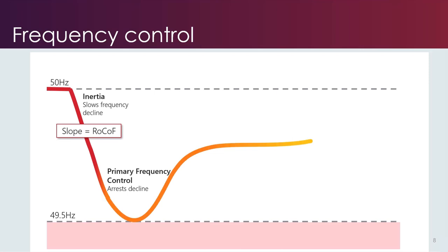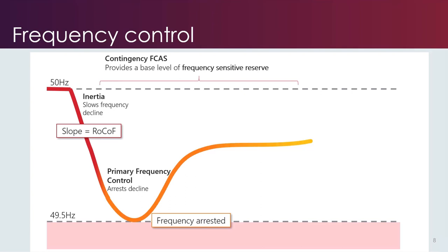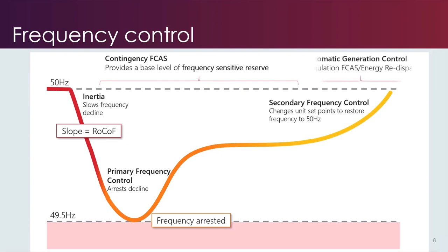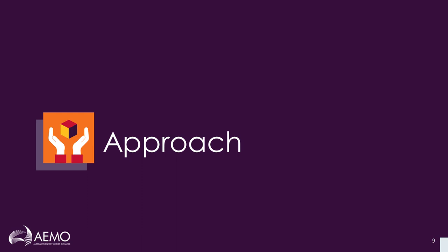If there is enough reserve available, the frequency decline will be arrested. In the NEM, these services are provided through the contingency products of the frequency control ancillary services — the FCAS markets — which helps ensure there is a base level of reserve with primary frequency control enabled. To then bring the frequency back to 50 hertz, secondary frequency control services are used to reset the system to balance. In the NEM, this reset is achieved by automatic generation control. A combination of different frequency control services interact with each other to help manage frequency, and these all need to be considered together going forward into 2025.